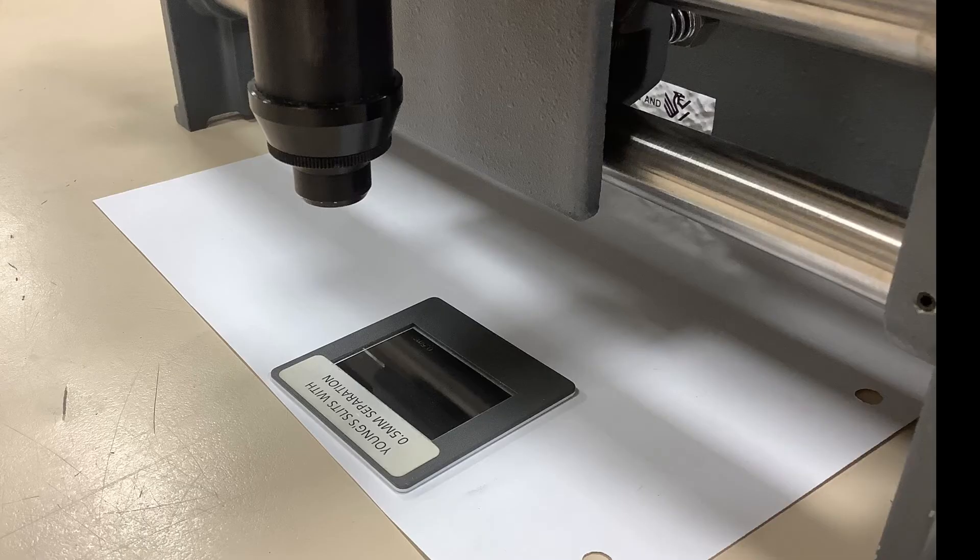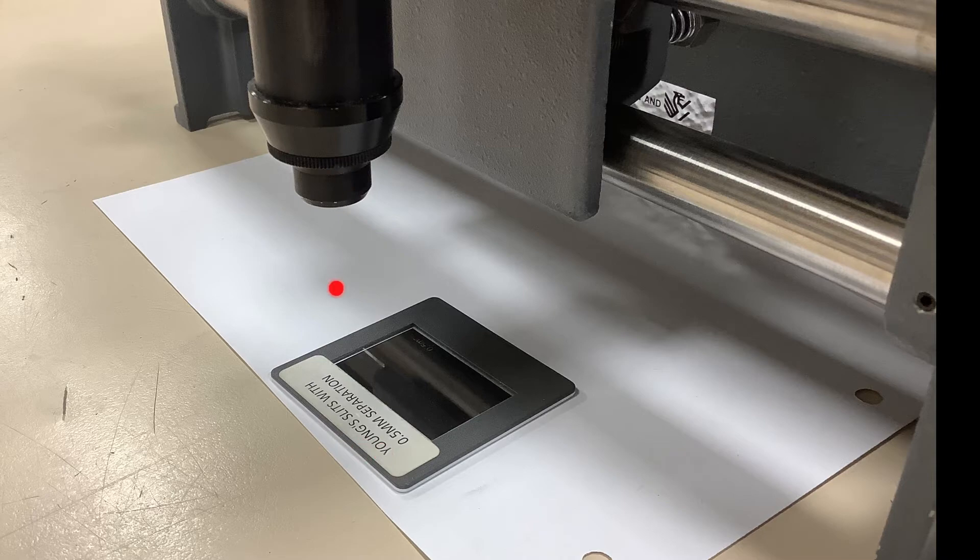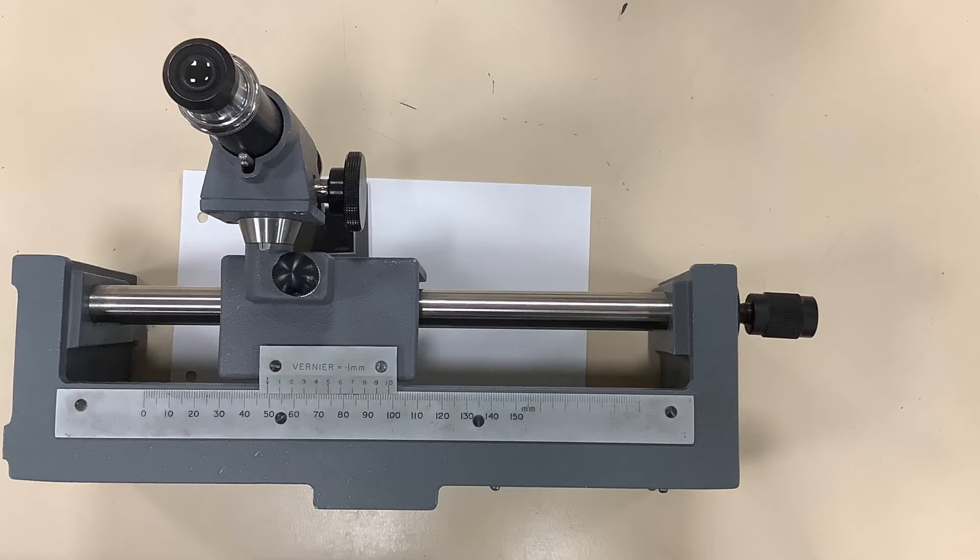This shows the view with the slit positioned underneath the microscope part and this shows it ready to go. You can just see the slit under there.